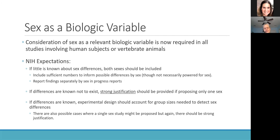NIH makes a specific point of discussing sex as a biologic variable. Among the biologic variables, sex has been given special emphasis by the NIH. They argue it's been frequently ignored, particularly in animal studies, and as a result this has led to an incomplete understanding of potential sex-based differences in disease processes and treatment response. They're trying to mitigate that sort of bias, and there's pretty much an expectation that sex as a biologic variable is going to be considered in almost all studies.